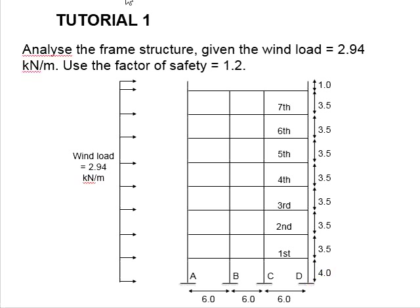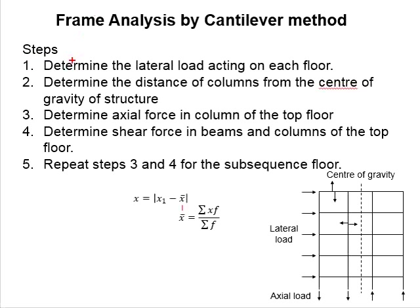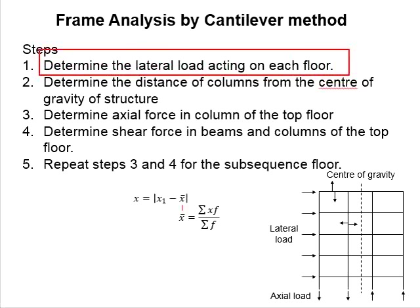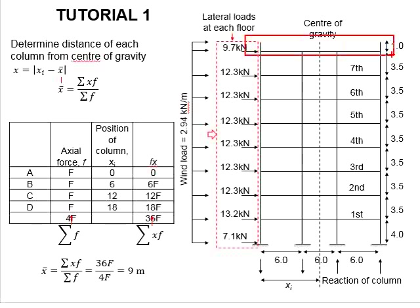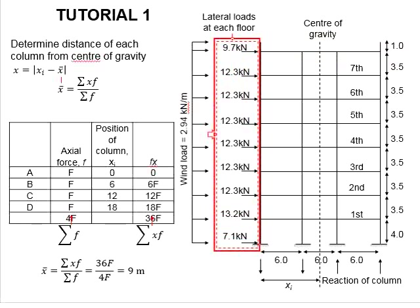The story heights are given as follows: 4 meters high for the ground floor, the rest of the floors are 3.5 meters, and there is a parapet wall of 1 meter on top of the roof. To solve this question, first determine the lateral load acting on each floor. This is obtained by multiplying the wind load with the factor of safety and the height of the floor levels. It is assumed that for each floor it is divided into half — half of the height goes to the upper story and the other half to the lower story. In the case that there is no upper story at the top roof level, the force will be taken entirely by the closest floor level.